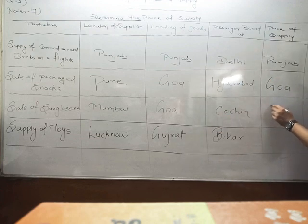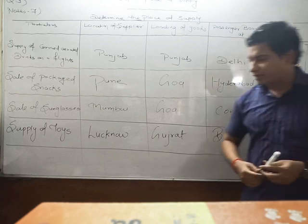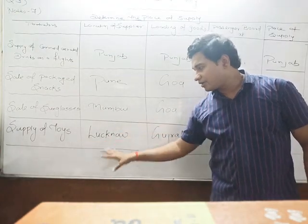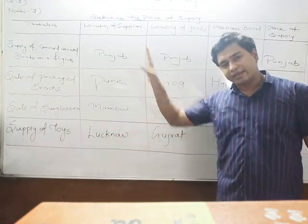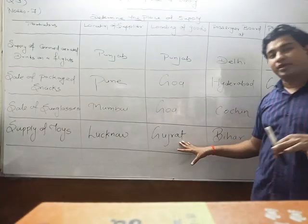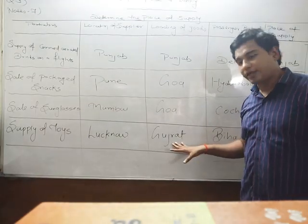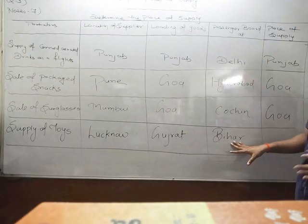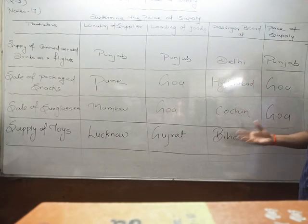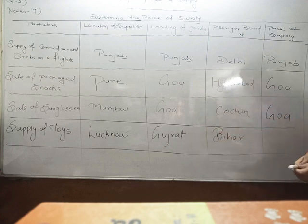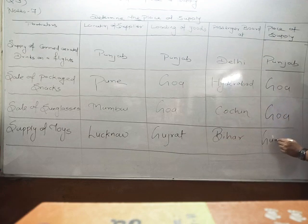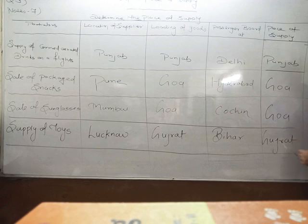Next is the supply of toys being sold in Lucknow. The goods were loaded in Gujarat when the flight was in Gujarat. The customer and company are in Vihar, but the goods are loaded in Gujarat, so Gujarat is the place of supply.